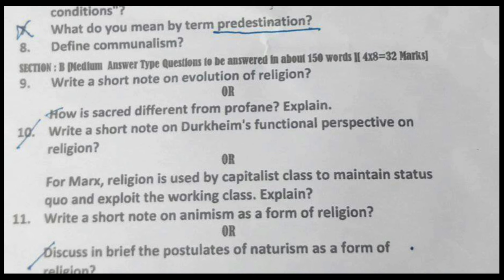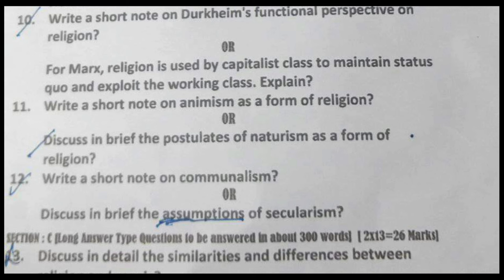Section B: medium answer type questions to be answered in about 150 words each. 4 into 8 equals 32 marks. Question 9: write a short note on the evolution of religion, or how is sacred different from profane — explain. Question 10: write a short note on Durkheim's functional perspective on religion, or explain how religion is used by the capitalist class to maintain the status quo and exploit the working class — Karl Marx and Max Weber conflict perspective. Question 11: write a short note on animism as a form of religion, or discuss the postulates of naturism as a form of religion.